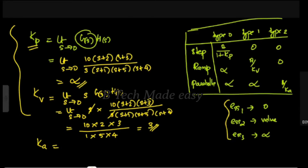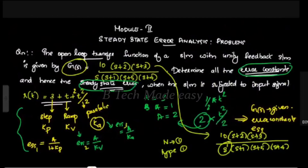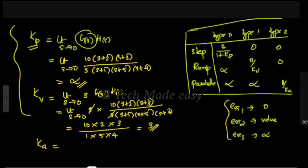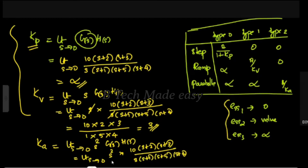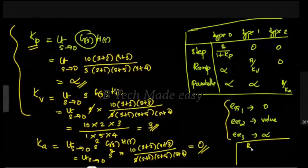For Ka, this corresponds to the parabolic input. As s tends to 0, the numerator term goes to 0 since there is no additional s factor to cancel the s² requirement. Therefore Ka = 0. So we have: Kp = infinity, Kv = 3, Ka = 0.